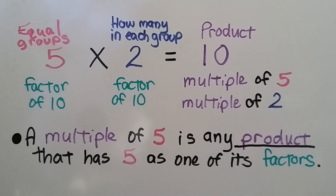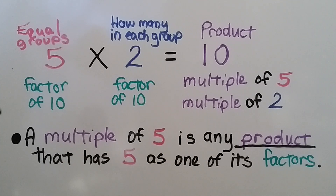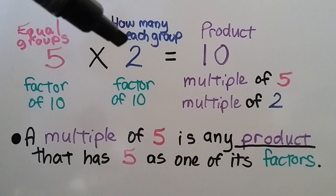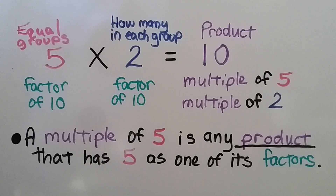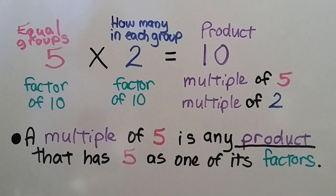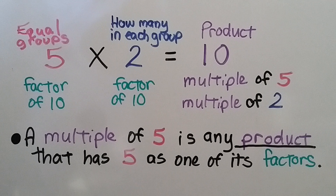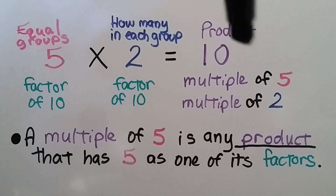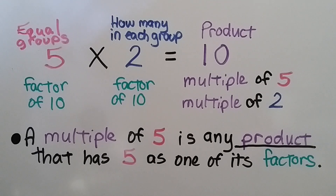In a multiplication sentence like 5 times 2 is equal to 10, the 5 is the number of equal groups, this is how many are in each group, and the product is the answer. We've also learned that 5 is a factor of 10, and 2 is a factor of 10. Now we're going to learn that this product, 10, is a multiple of 5 and also a multiple of 2. A multiple of 5 is any product that has 5 as one of its factors. So 10 is a multiple of 5 because there's a 5 as a factor, and it's a multiple of 2 because it has 2 as a factor.